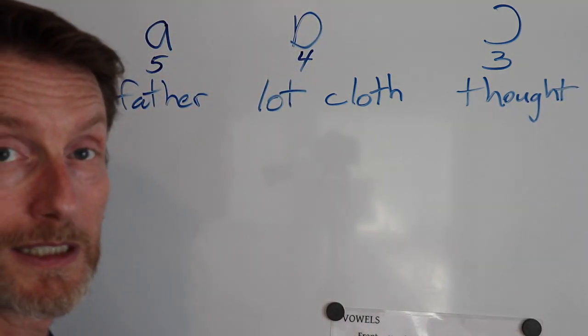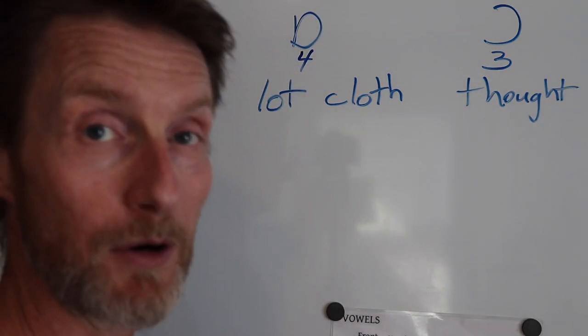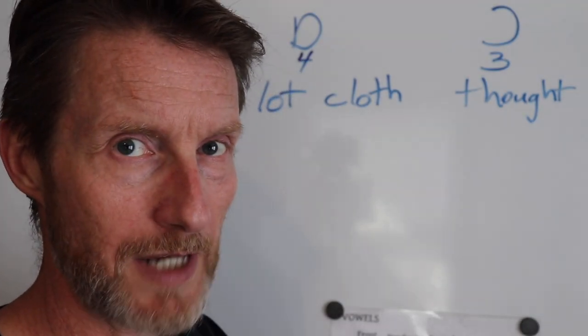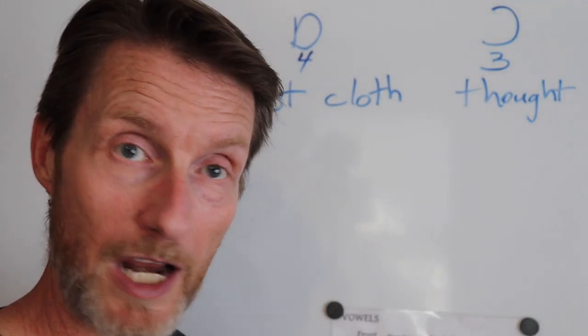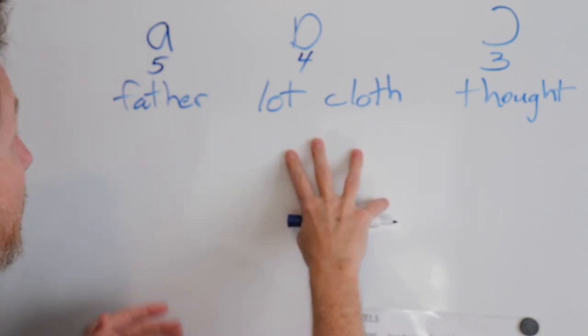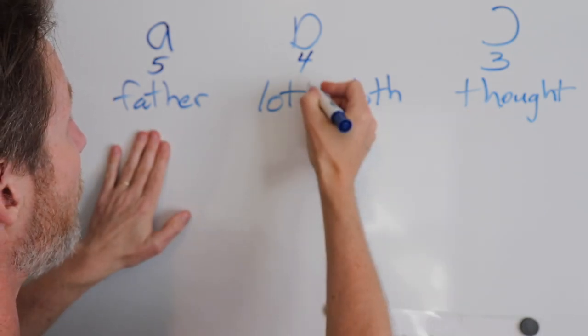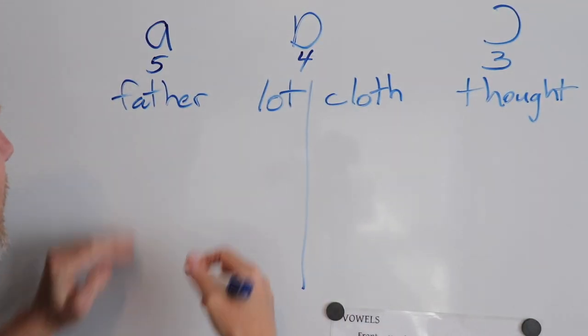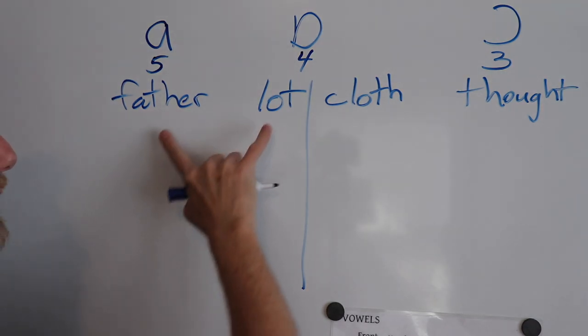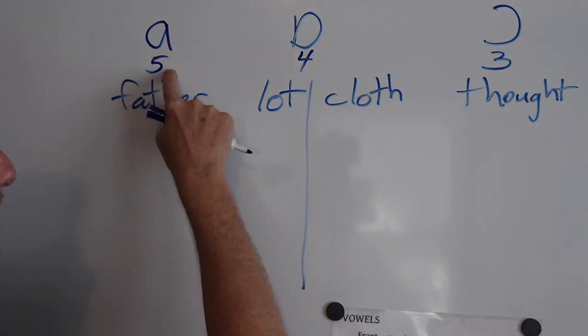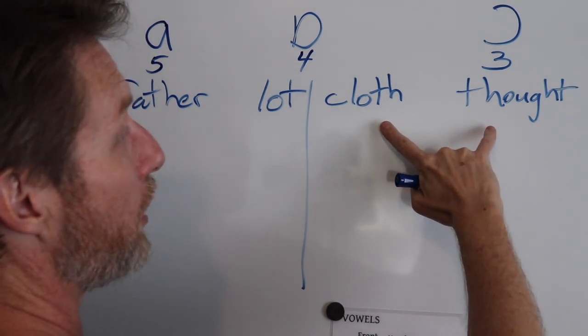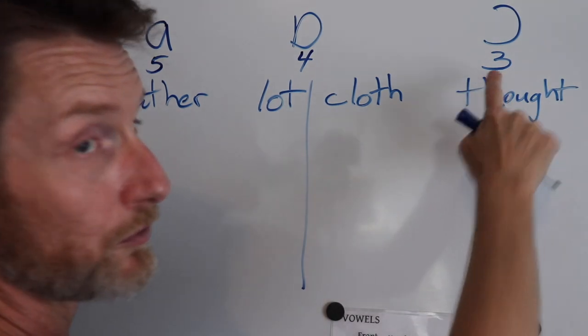Here's what I want to say. Americans in general, this is not absolutely true, but Americans in general don't use fours. They mostly use threes and fives. So what we end up with is a split here where we say father, lot, both as fives, and cloth, thought, both as threes.